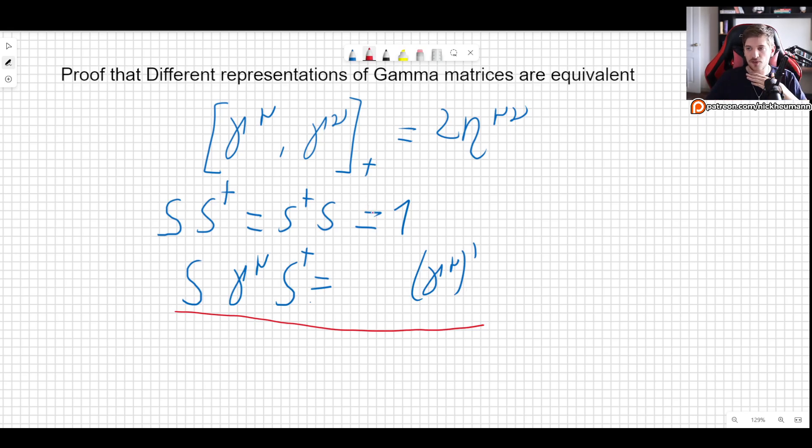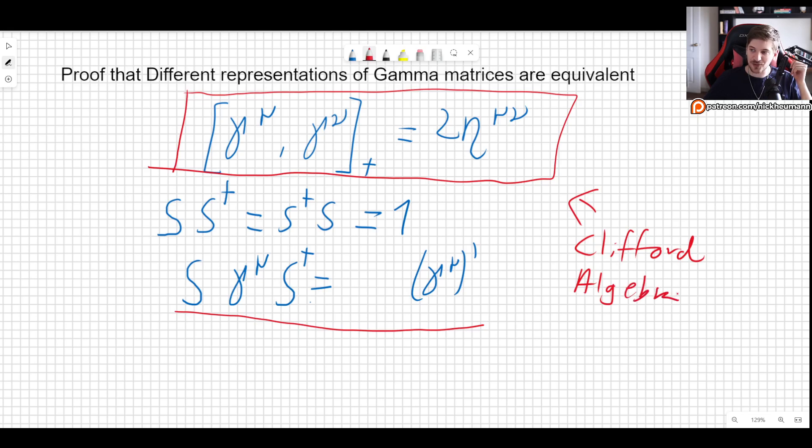So if all of these representations are equivalent, we expect that the gamma mu prime also satisfy their own version of the Clifford algebra. This is the Clifford algebra, something incredibly important that we always have to remember, but this is what defines literally everything regarding gamma matrices. Everything comes from there.